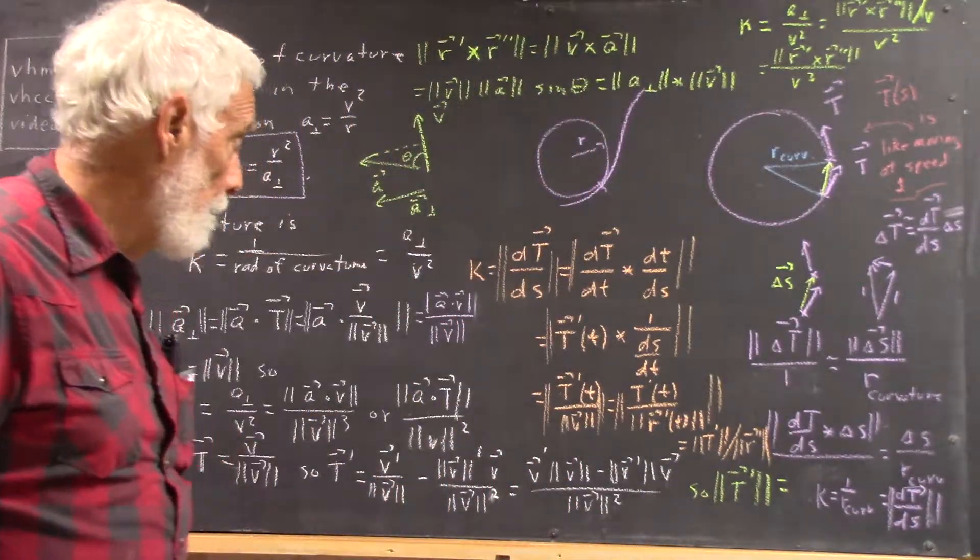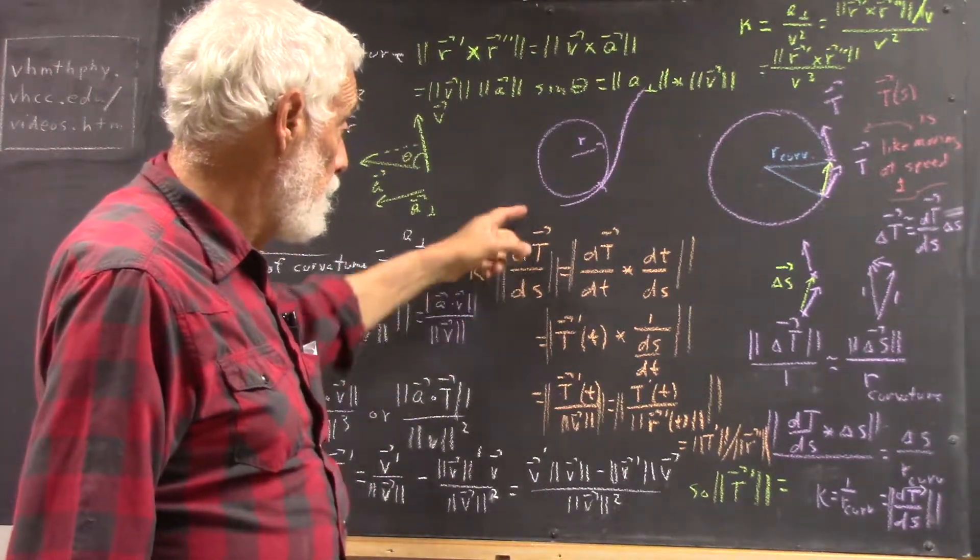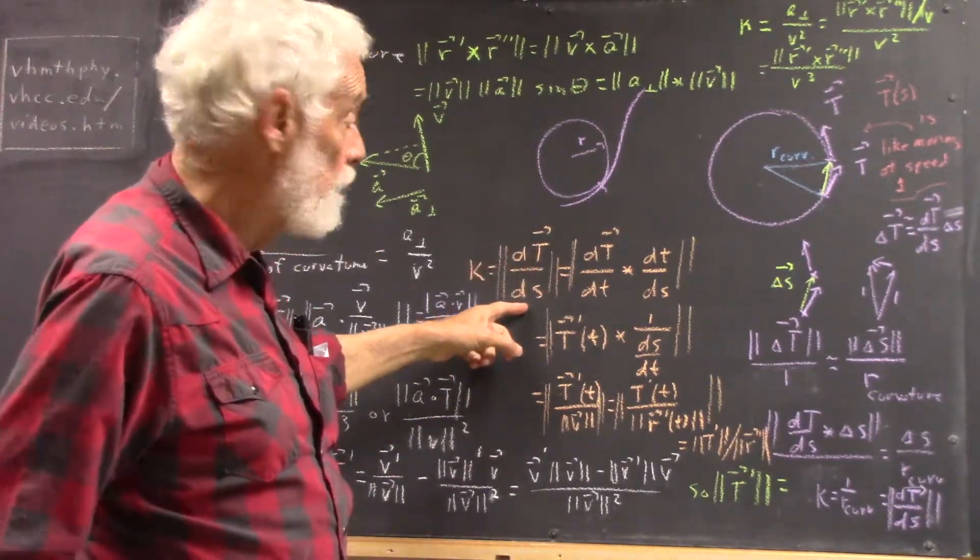A little more sense maybe here. Okay, so our curvature is the rate of change of our unit tangent vector with our position. Why should that be?